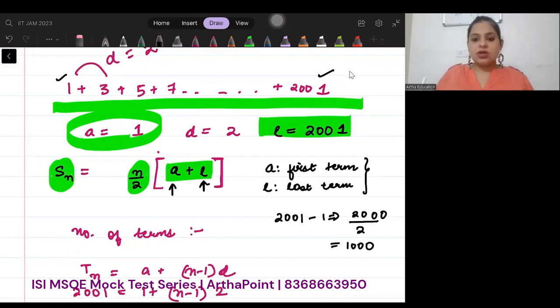Some will put n as 1000, some will put n as 1001, some will put n as 999. So this is always confusing for students as to what is the value of n that we should be putting.